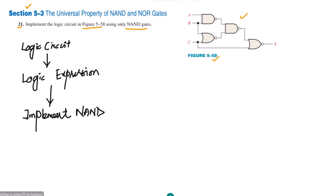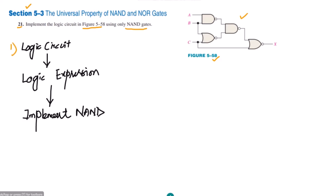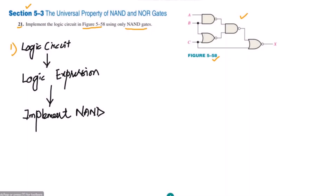Here we have the first gate, which is a NAND gate. In order to find the logic expression, the output of this NAND gate will be AB complement. Here the two inputs B and C are applied to a NOR gate, so B plus C whole complement will be the output. Both of these are then applied to another gate, and at the output we will get AB complement dot (B plus C whole complement), with the whole complement of it.